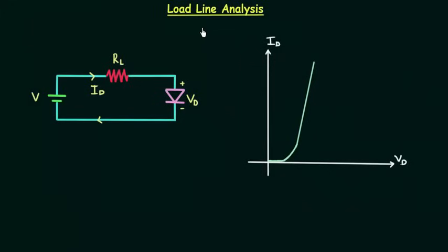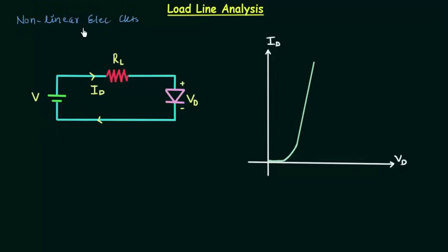In this presentation we will do the load line analysis of a PN junction diode. We use load line in graphical analysis of non-linear electronic circuits. Non-linear electronic circuits are circuits having non-linear VI characteristics, for example diode and transistor. You can see the VI characteristics for a diode are non-linear because they do not follow Ohm's law.